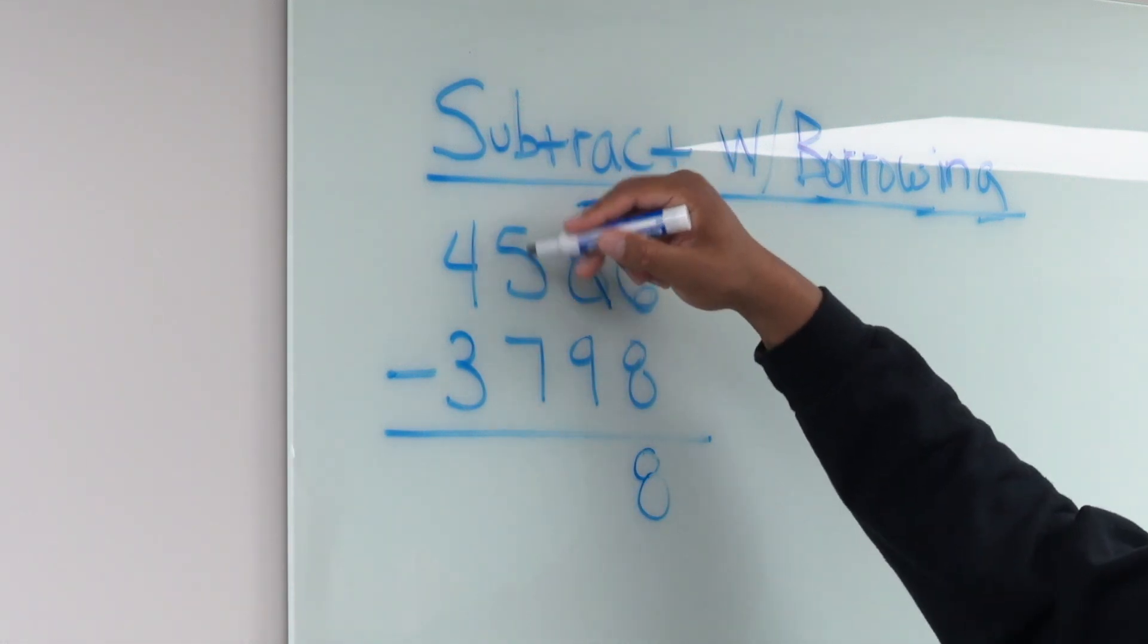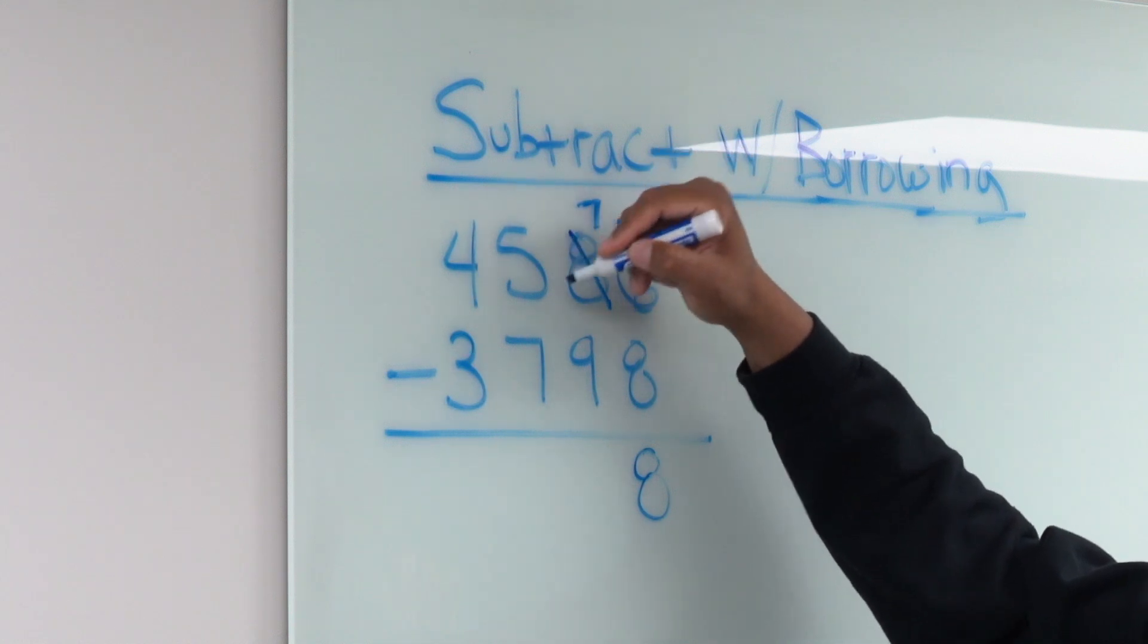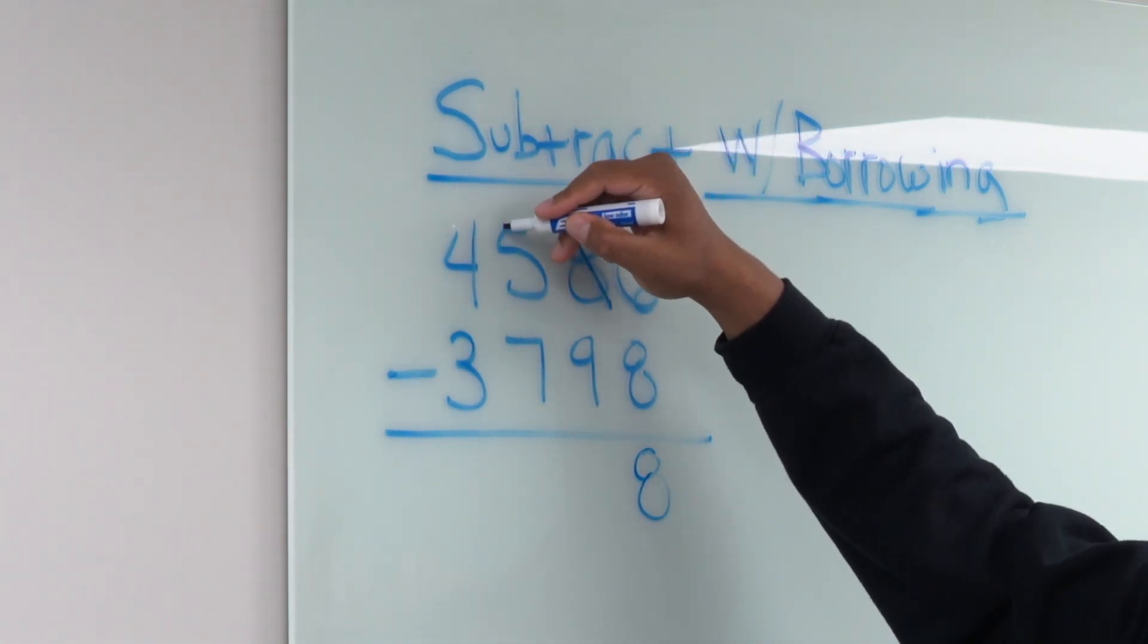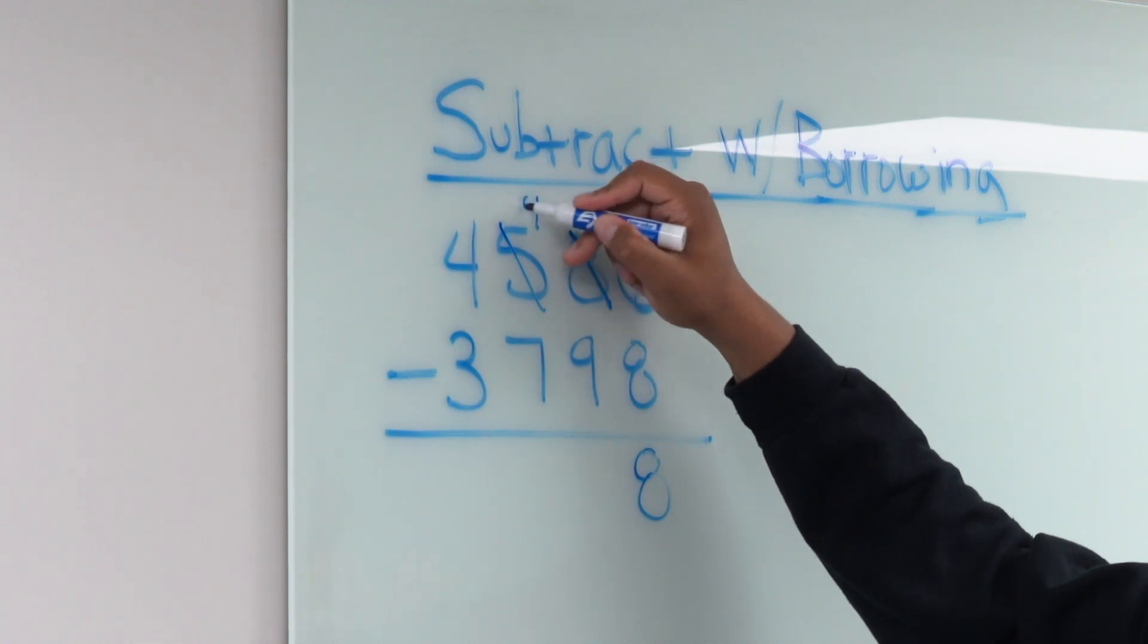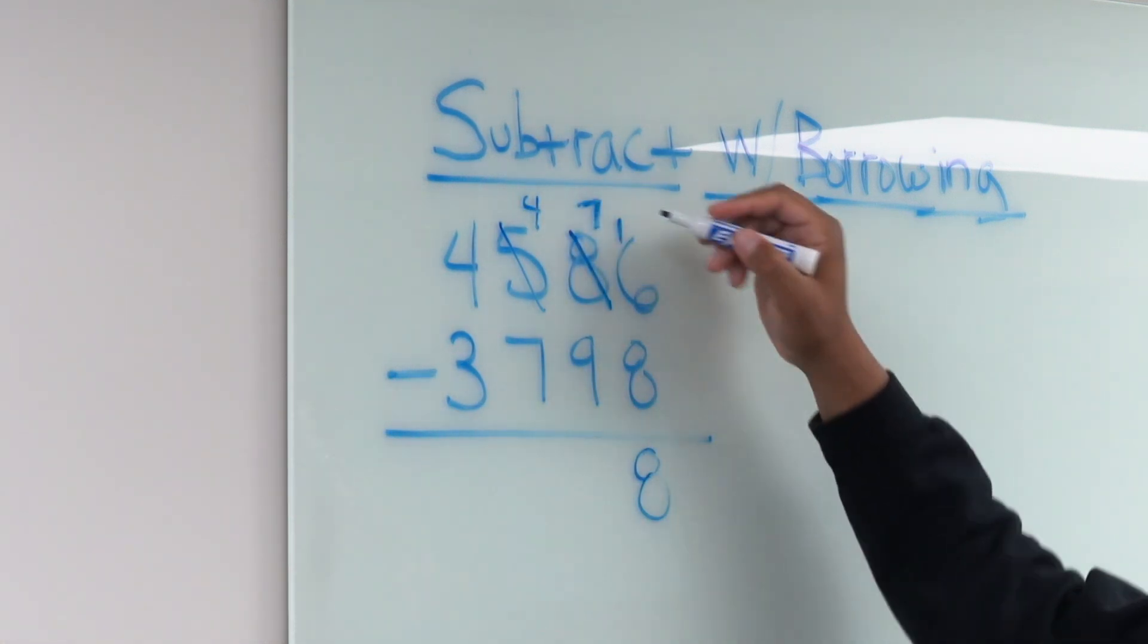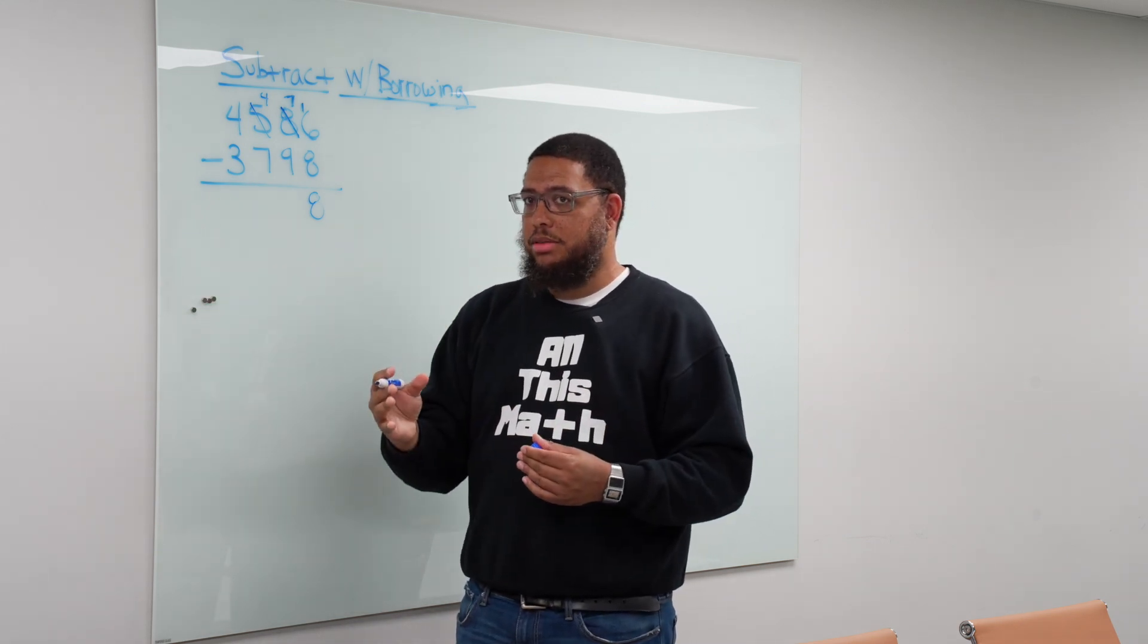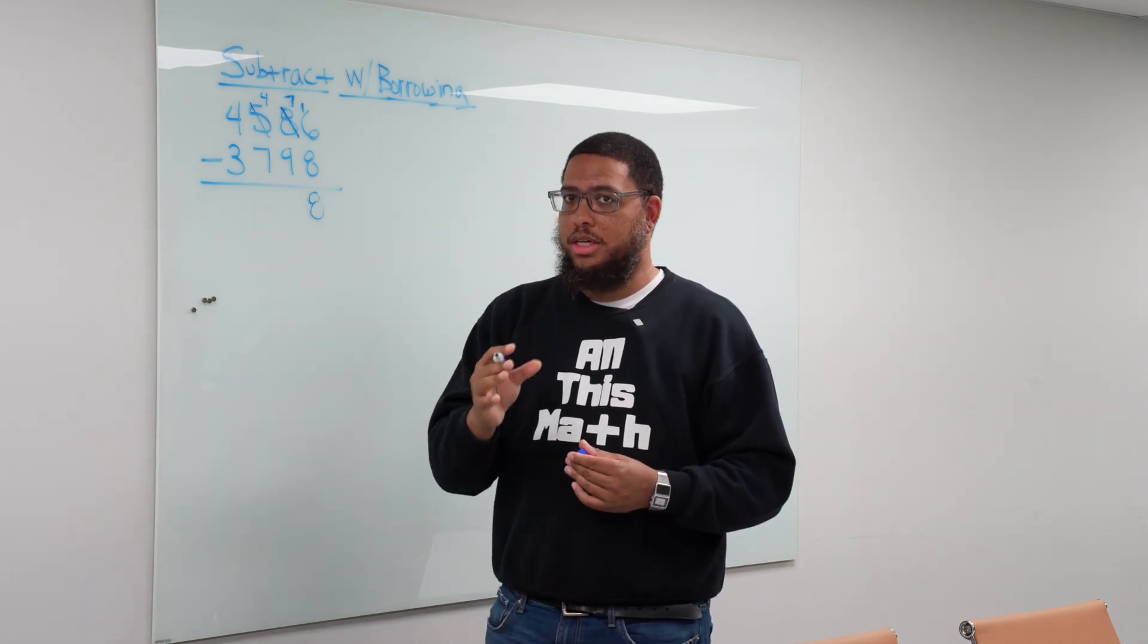Now in the hundreds place we have five hundreds right here. That's what this 5 really means. We got five hundreds. So we're going to take a hundred from these five hundreds and then we're going to be left with four hundreds and then with that 100 we're going to put it over here with the tens. Now think about this. 100 is the same as 10 tens.